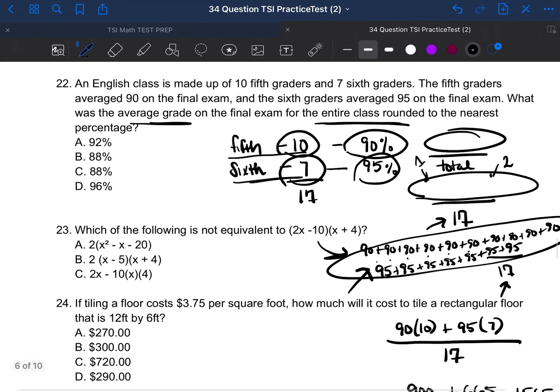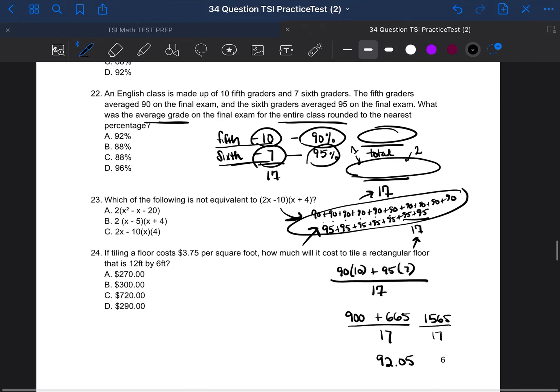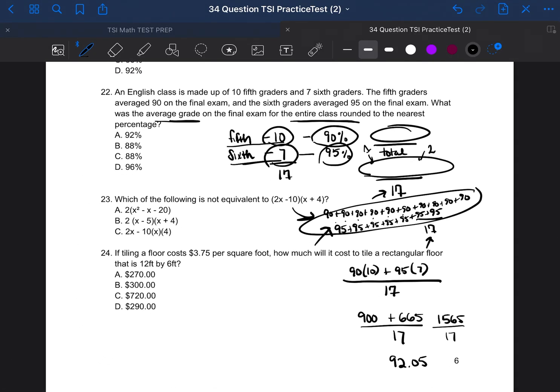And they asked us rounded to the nearest percentage. So they want us to round it to the nearest whole percentage. So it would be 92%. Our answer would be A.